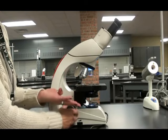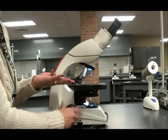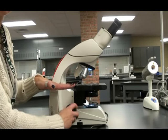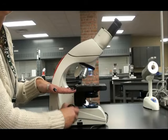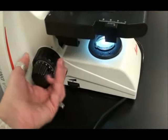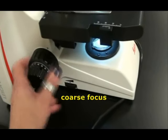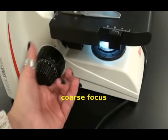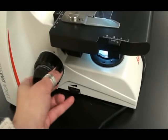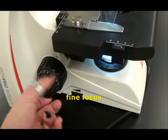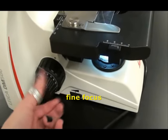The focus knobs raise and lower your stage, and the vertical position of your specimen is what determines whether it's in focus or not. On this scope, the coarse focus can be adjusted by turning the part of the knob that's closest to the body of the scope. The fine focus can be adjusted by manipulating the outer portion of this knob.